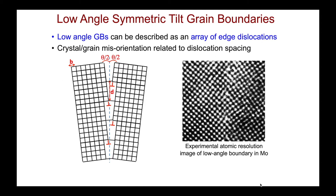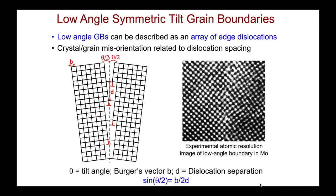A low-angle grain boundary can actually be described in many cases as an array of edge dislocations, and the crystal misorientation can be related to that dislocation spacing through a simple equation. At the dislocation cores at the grain boundary there is higher energy, but by forming this familiar type of defect at the boundary the rest of the structure at that interface can be maintained.